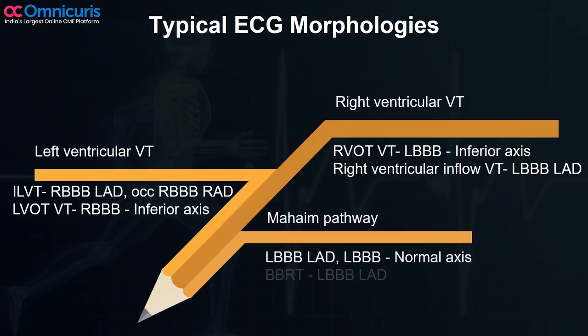Mahem pathways, which are supraventricular tachycardias, may be associated with a left bundle branch block morphology and may have a left axis or a normal axis.